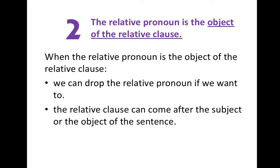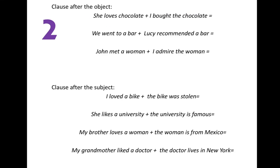The relative clause can come after the subject or the object of the sentence. So let's see some examples of the second type. We're going to connect sentences the same way as before. Clause after the object of the sentence: 'She loves chocolate' and 'I bought the chocolate.'